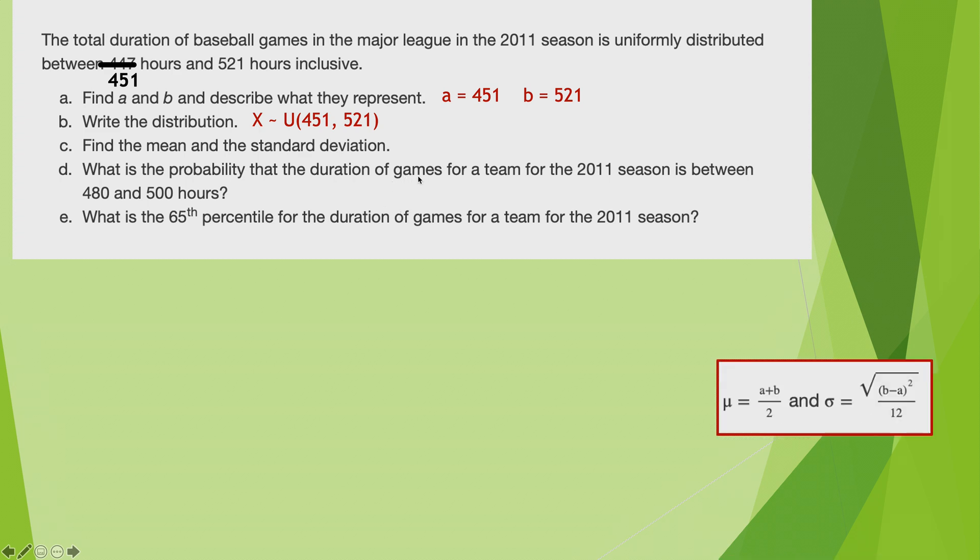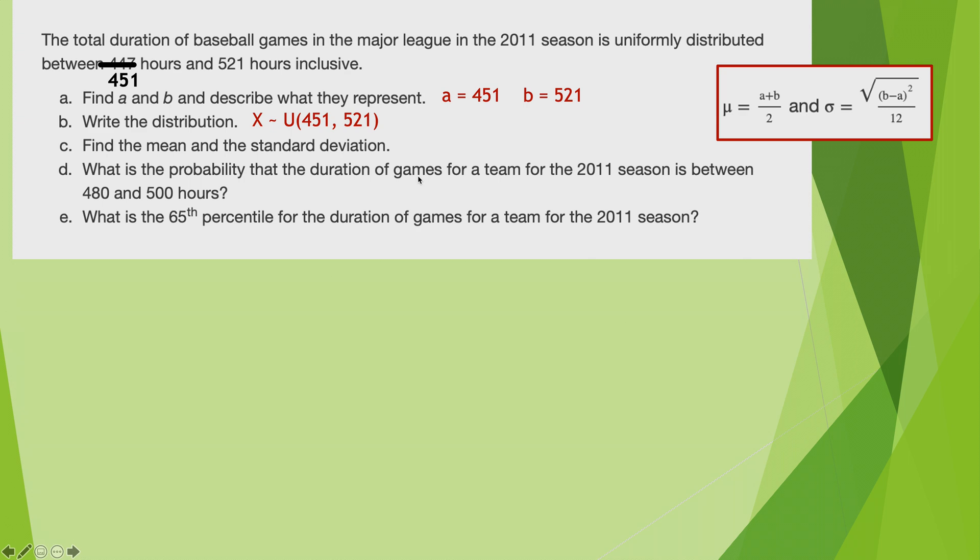Find the mean and the standard deviation. Well, you need the formula again. You just had them a minute ago. By now, you should know it's A plus B over 2 and the square root of B minus A squared over 12. So I start pumping through with those numbers.